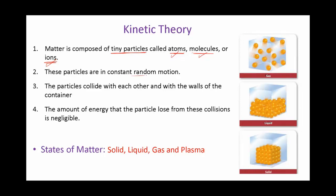These particles are in continuous random motion — the particles are always moving and always colliding with each other. When they move they collide with each other, and this collision is responsible for exchanging energy. So let's say if a particle has six joules of kinetic energy and another one has two joules, and they collide with each other, during the collision there will be an exchange of energy. The one with higher energy will give some of its energy to the other one.